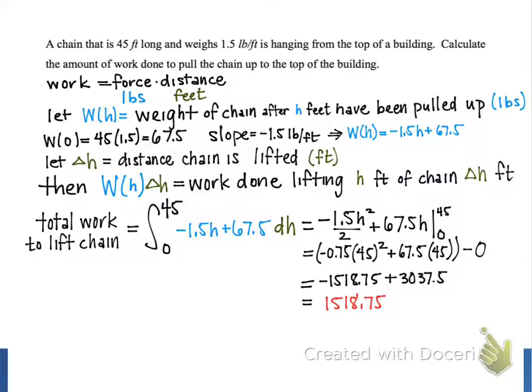But now since this is an application, we want to remember to put the appropriate units on our answer. And so our final result is 1,518.75 foot-pounds of work that we did in order to lift that entire 45-foot chain up to the top of the building.